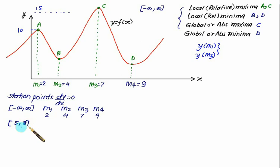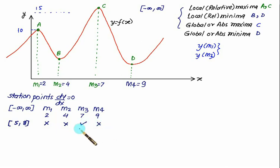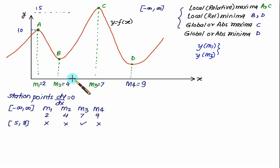Now suppose we take a range from 5 to 8. Out of the four stationary points, m1 = 2 and m2 = 4 are not valid in this range, m3 = 7 is valid, and m4 = 9 is not valid. So only one stationary point, m3, lies in the range 5 to 8, and we observe only this region.